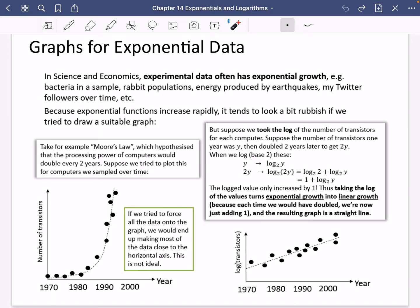So with this one, when it's doubling, each time it doubles, it's going to get steeper and steeper. So instead, what we do here is we take the log of these numbers. And it says, suppose we took the log of the number of transistors on this y-axis for each computer. Suppose that the number of transistors one year was y, and then it doubled two years later to get 2y. Because that's what Moore's law says, it's going to double every two years.